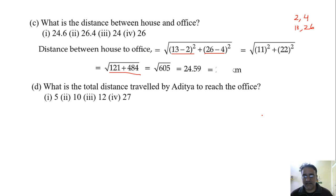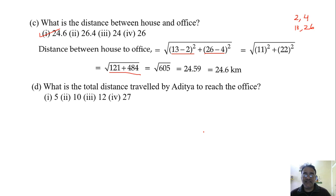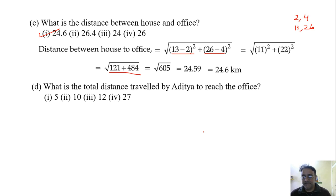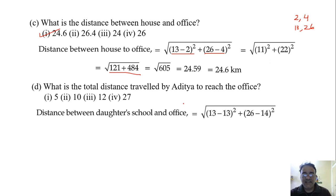We can take approximately 24.6, so the first option is correct. Now, what is the total distance traveled by Aditya to reach the office? He first went to the bank, then daughter's school, then the office. So total distance equals the sum of all those legs.